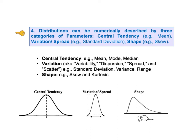Second is variation, which measures how spread out the distribution is. In the three illustrations at the bottom of the slide, the distribution on the left is more spread out than the distribution in the middle. Variation is also known as variability, dispersion, spread, or scatter. Common measures of variation include standard deviation, variance, and range.